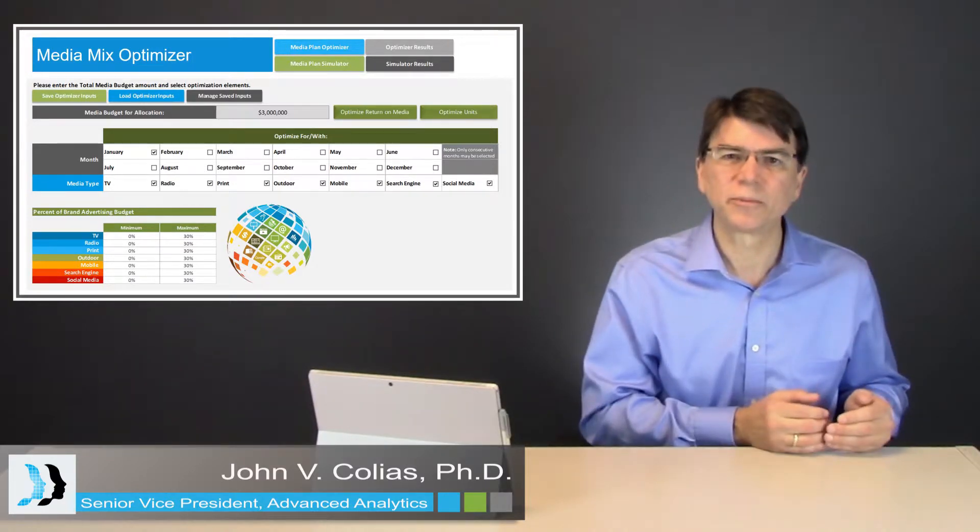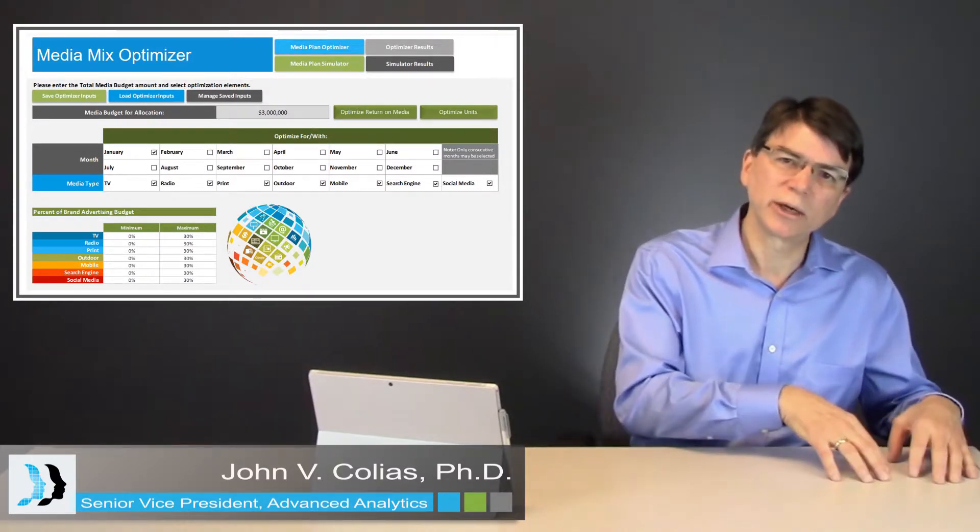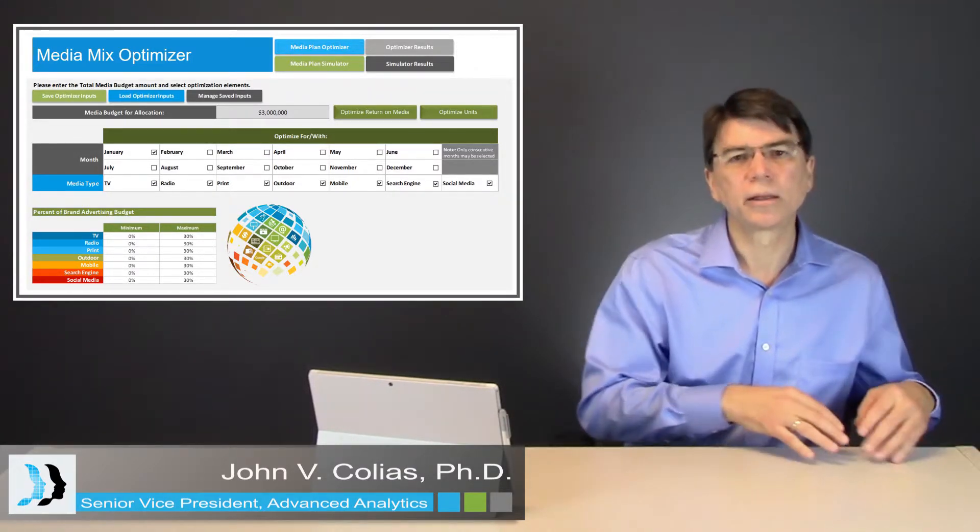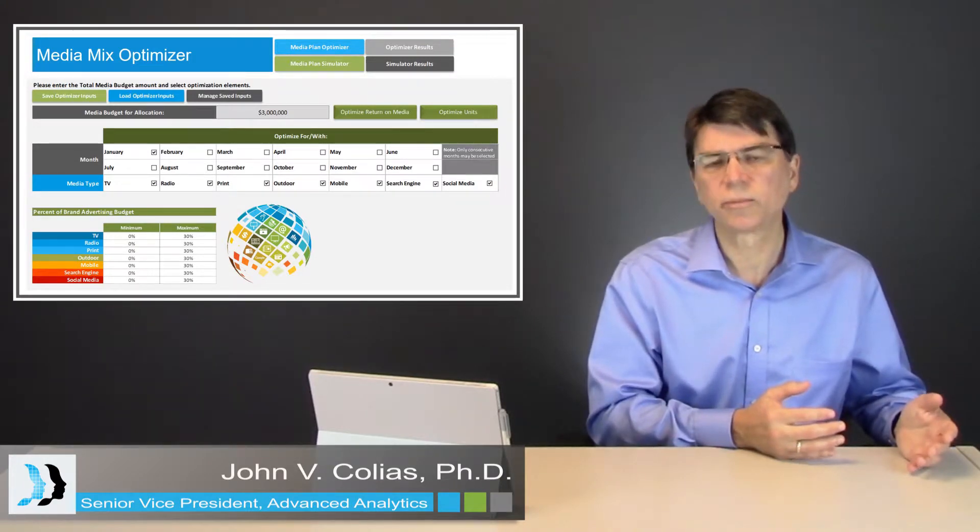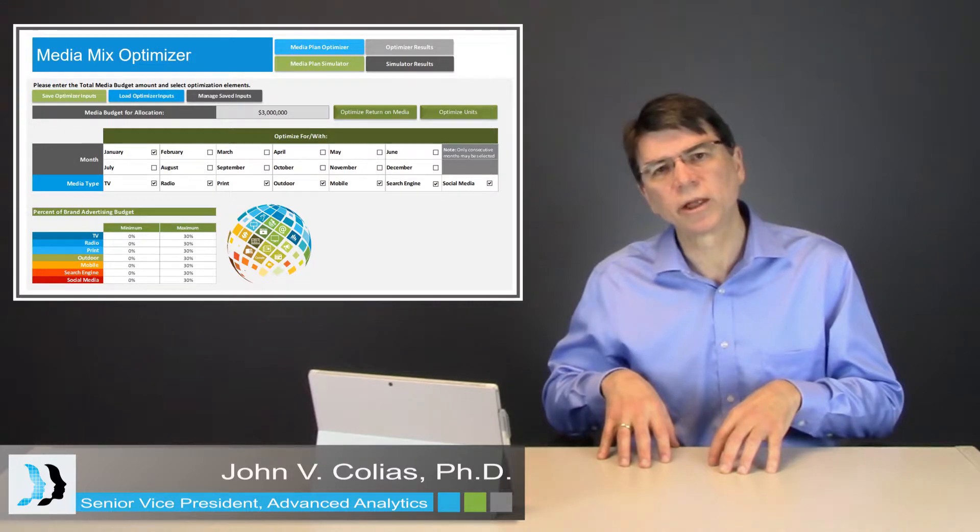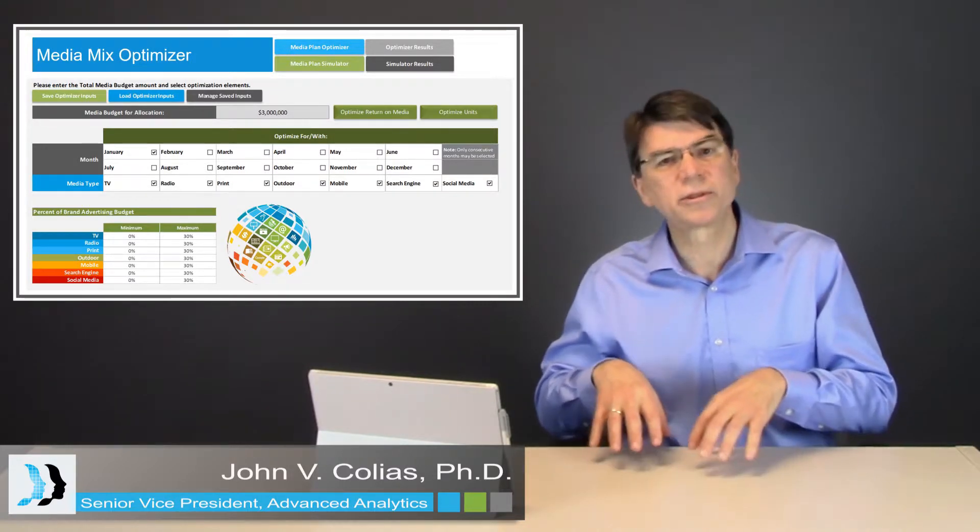This can be done through what-if simulation. Try a particular combination of media activities and spend levels and determine what the level of sales is through simulation, and then try a different combination of media activity and determine what the sales is for that.